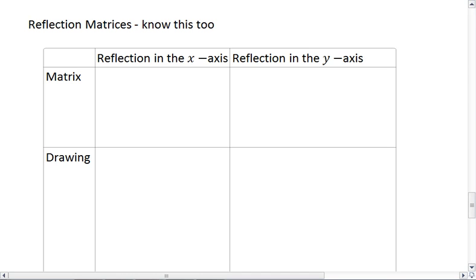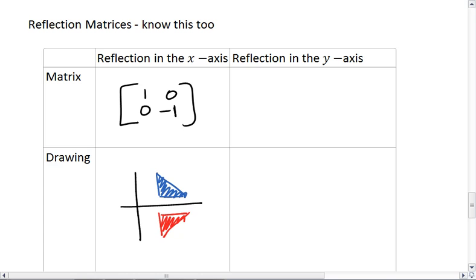The matrix for reflecting across the x-axis is 1, 0, 0, negative 1. The 1, 0 keeps our x value the same, whereas 0, negative 1 makes it so that our y value changes its sign. And so what this does is it takes the matrix for any polygon that we have and reflects it across the x-axis, and it will give us that image matrix.